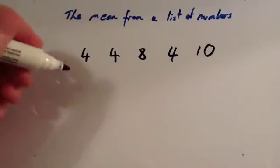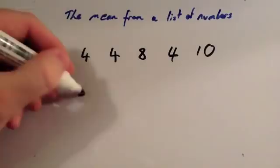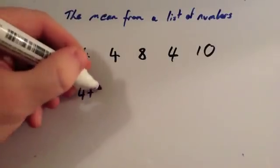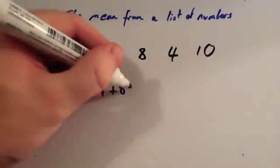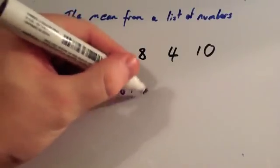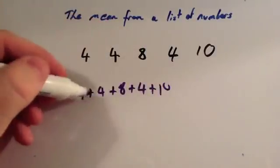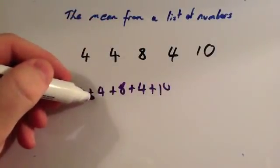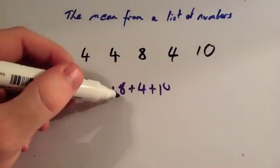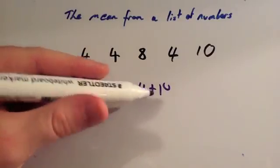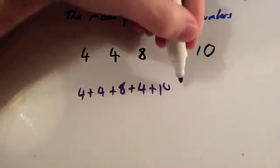So our first step is to add up the values. We're going to do 4 plus 4 plus 8 plus 4 plus 10. So 4 plus 4 is 8, plus 8 is 16, plus 4 is 20, plus 10 is 30.